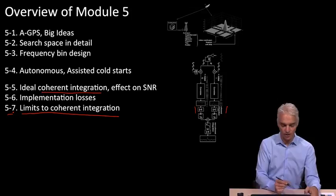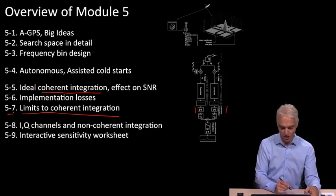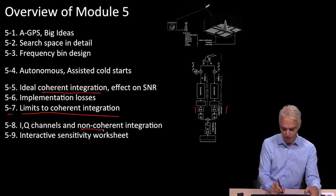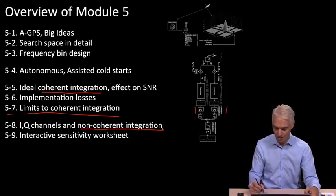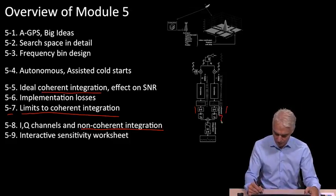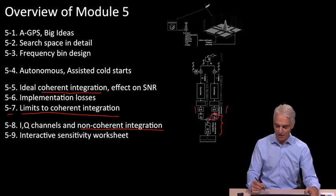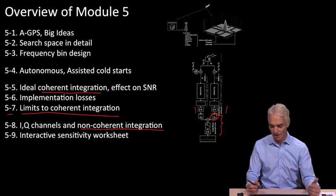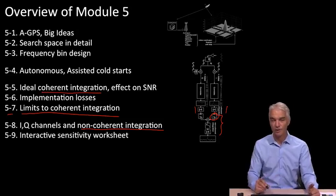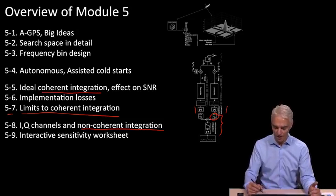And then, we're going to get to the culmination of this module, which is non-coherent integration, which is the key to high sensitivity along with the AGPS. And that's all this part of the receiver, where we do a squaring operation, which you can see hiding in there. And the squaring is what makes the signal non-coherent with phase. That's why that term non-coherent shows up, and it'll make a lot more sense as we go through.